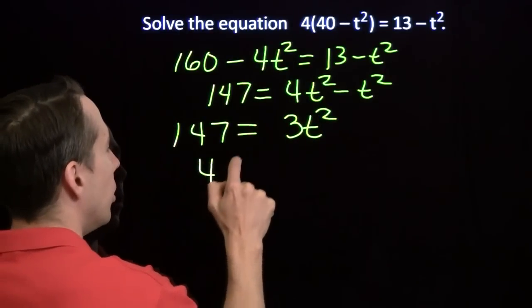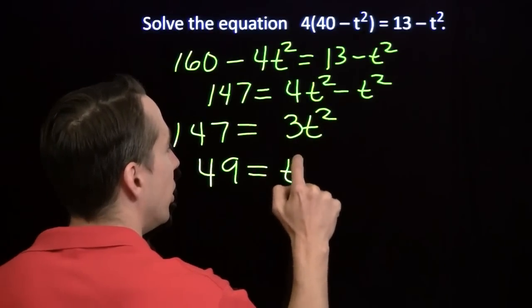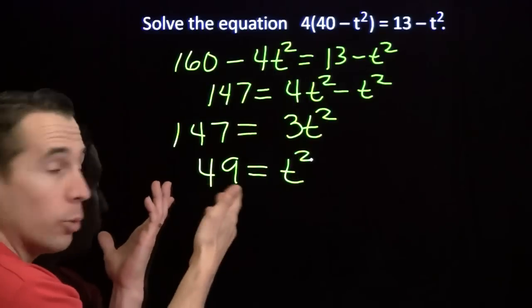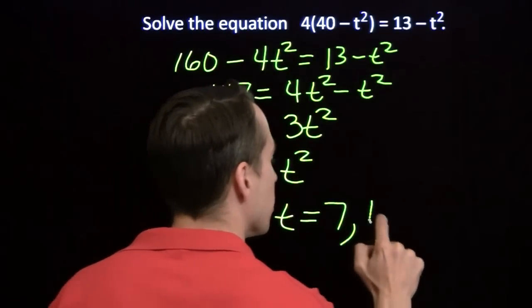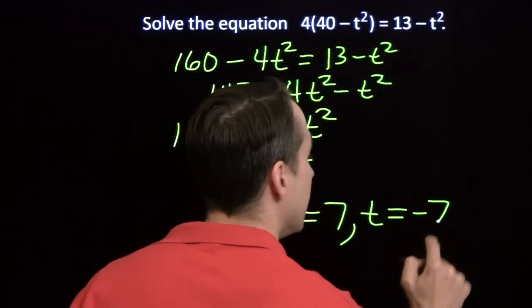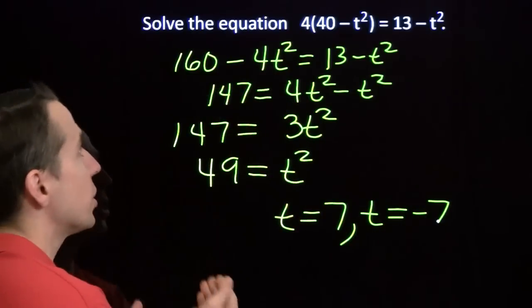Subtract t squared from 4t squared, you're going to be left with 3t squared. Divided by 3, you have 49 equals t squared. We have a square equals to a positive constant here. We know what that means. There are two solutions. t equals 7 and t equals negative 7 are both solutions to this equation.